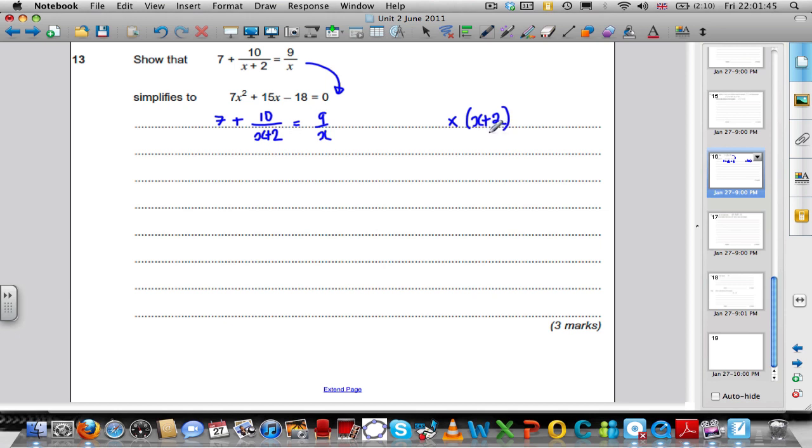Not just one term, every term. So let's do it on the left-hand side. We're going to multiply 7 by X plus 2. We're going to multiply the 10 by X plus 2, but it's over X plus 2. And we're going to multiply the 9 over X by X plus 2.